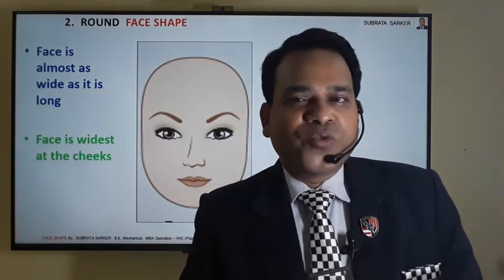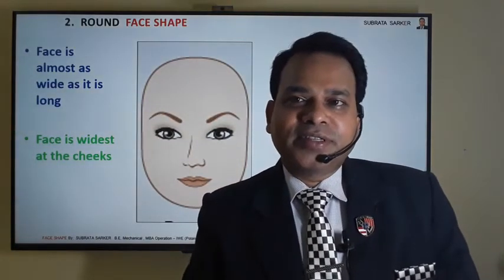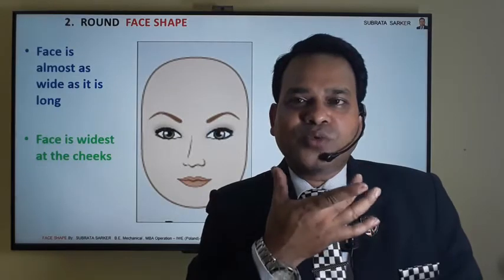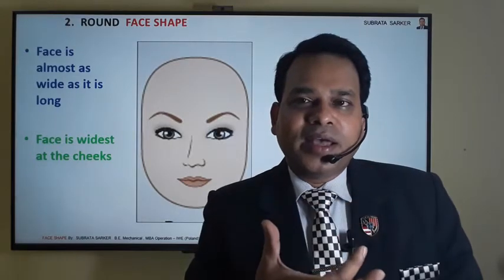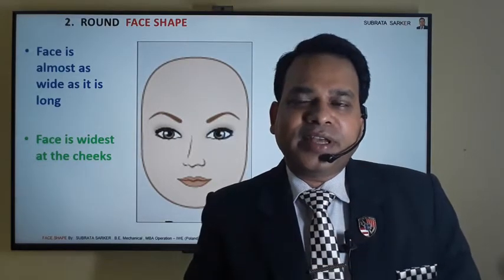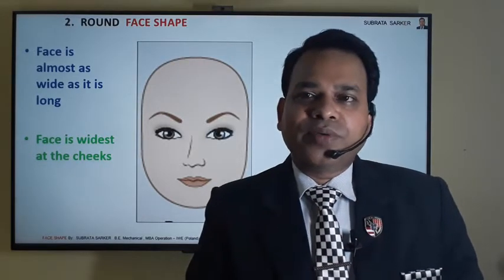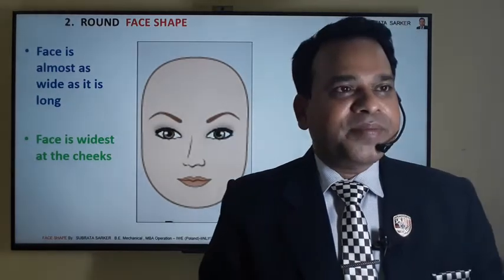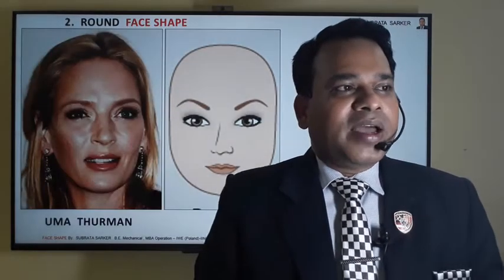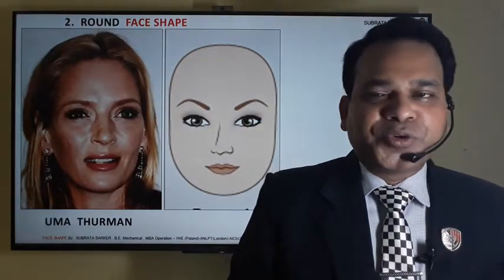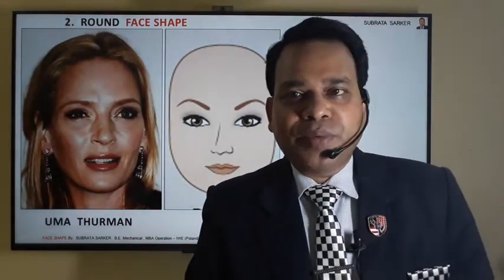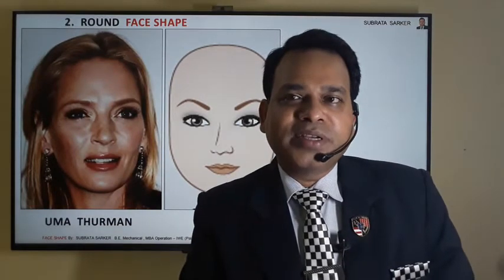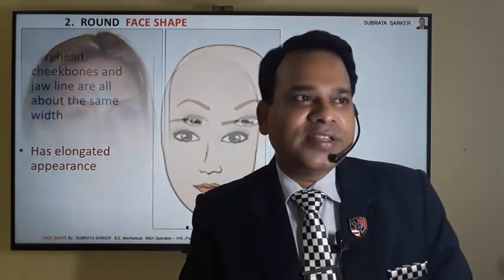Number two is the round face. Here the jaw line is wider, and the length and width of the face is almost the same. Another supermodel, Uma Thurman, she has a round face.